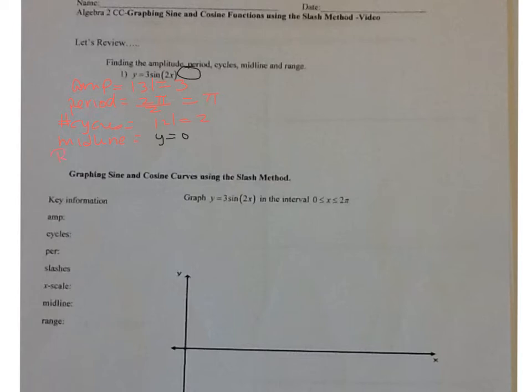Your range is how far up and how far down it's going from the midline. It's going up 3 and down 3. So it's going down 3 from 0, to negative 3 — that's less than or equal to y — and up to 3 from y equals 0.